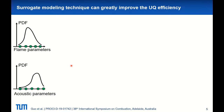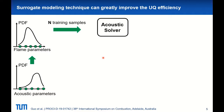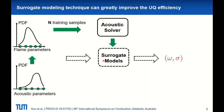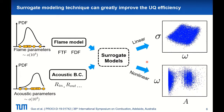The idea is simple. We carefully select some samples of flame and acoustic parameters and use the acoustic solver to calculate their corresponding mode eigenvalues. Based on this training dataset, we can train two surrogate models which take in flame and acoustic parameters and output the approximated mode frequency and growth rate values. Once the surrogate models are trained, we can apply Monte Carlo directly to those surrogate models to obtain the same output distribution.